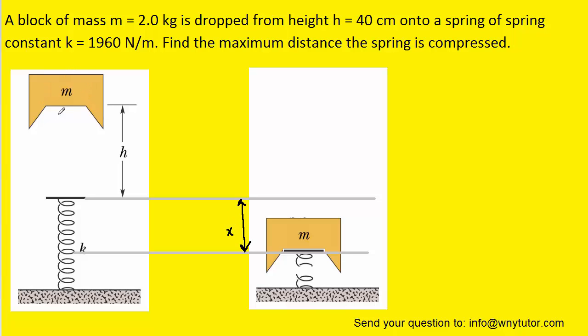What we need to do is explore the types of energy that are present initially and also finally. Initially the block is at rest, the spring is relaxed, so the only energy that's present would be the gravitational potential energy, which of course is equal to mg times a height. We can see from the diagram that overall the block falls a height of h plus x.